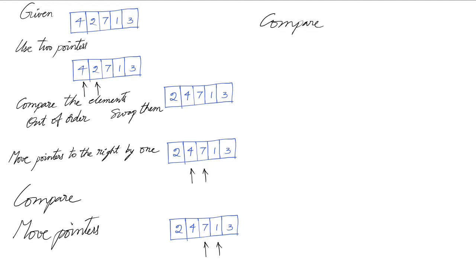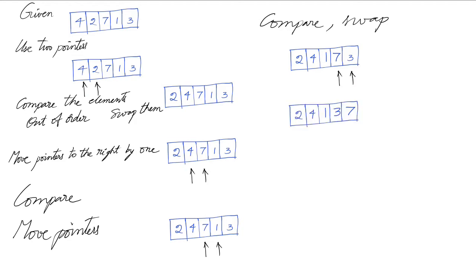We compare seven and one. Seven is greater than one, so we need to swap them. The array now has one and seven swapped. We move the pointers one to the right — they are out of order, so we swap them again.